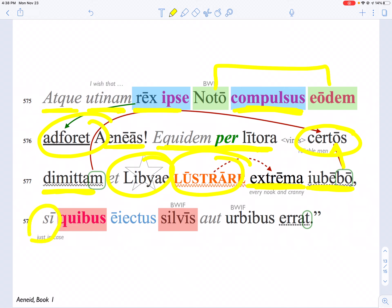If by any chance he, having been tossed out from his ship, Aeneas, wanders either in some forests or in some cities.